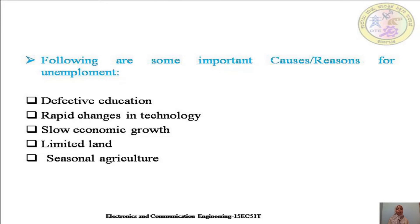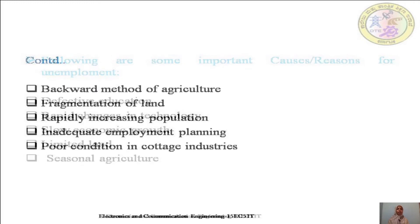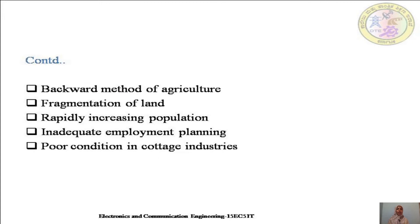The following are some of the important causes or reasons for unemployment: defective education, rapid changes in technology, slow economic growth, limited land, seasonal agriculture, backward method of agriculture, fragmentation of land, rapidly increasing population, inadequate or insufficient employment planning, and poor condition in cottage industries.